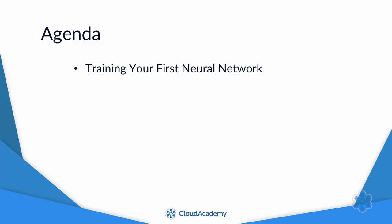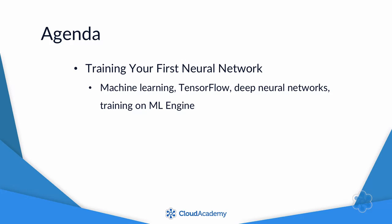To train your first neural network, we'll start by going over machine learning concepts. Then we'll go through a TensorFlow program and run it. TensorFlow is a set of Python libraries that make it easier to create neural networks — Google open-sourced it in 2015. Next, you'll learn about deep neural networks, also known as deep learning, and then use Google's ML Engine to train your machine learning model.